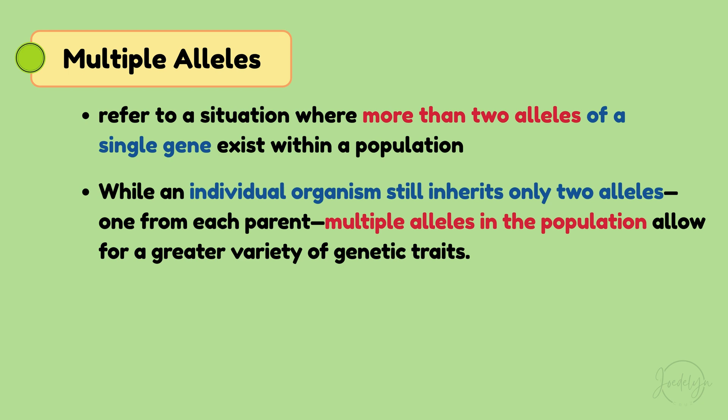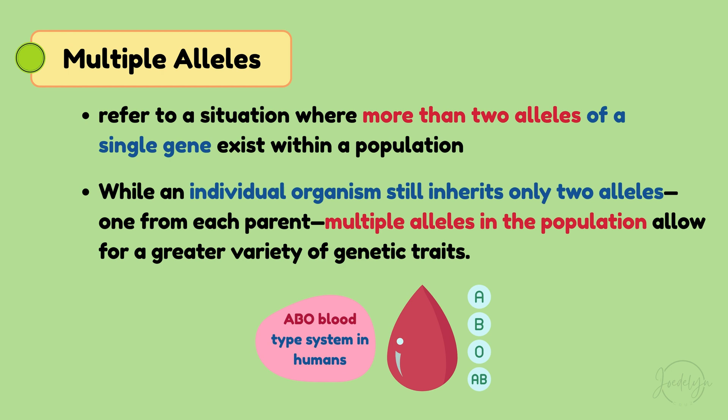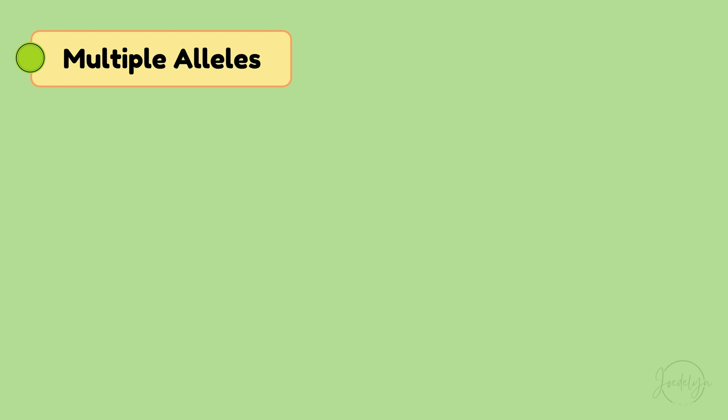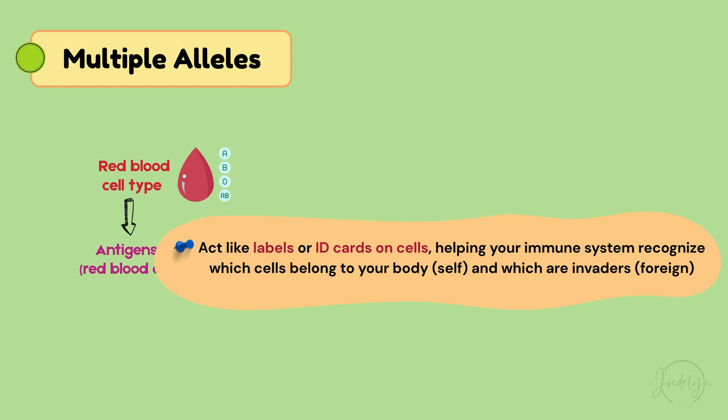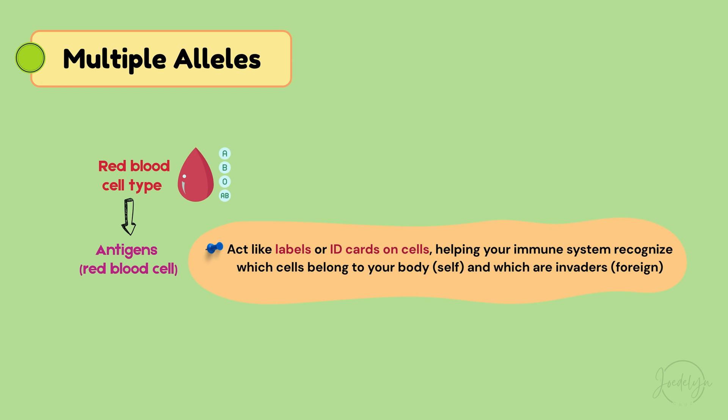A classic example of this is the ABO blood type system in humans. Your blood type — A, B, AB, or O — is determined by antigens on your red blood cells. Antigens act like labels or ID cards on cells, helping your immune system recognize which cells belong to your body and which are foreign invaders.